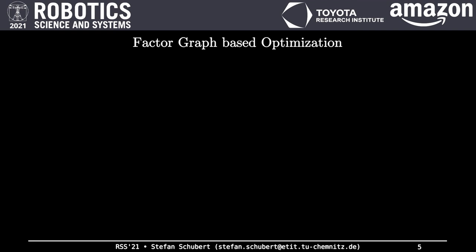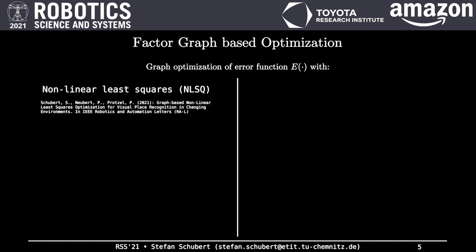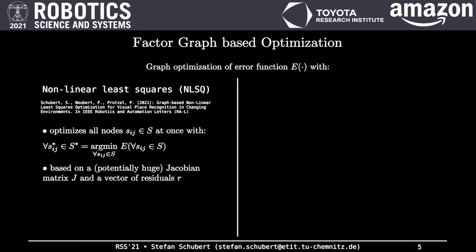After the formulation of the graph, the graph's nodes have to be optimized in order to refine the similarities from the initial pairwise image comparisons. Therefore, error function E of the graph has to be minimized. In our recent work, we used the well-known nonlinear least squares optimization. It optimizes all nodes at once using a Jacobian matrix J as well as a vector of residuals R. We could show that this approach obtains high performance. A drawback is its slow runtime as well as its memory inefficiency due to the potentially huge size of the Jacobian matrix and the vector of residuals in case of large-scale datasets.